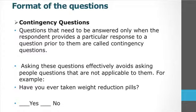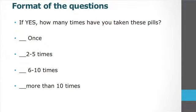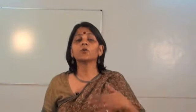Another type of closed-ended question is the contingency question — questions that need to be answered only when the respondent provides a particular response to a prior question. Asking these questions effectively avoids asking people questions that are not applicable to them. For example, if I ask, 'Have you ever taken weight reduction pills?' and the answer is no, we do not proceed further. But if the respondent says yes, then we ask follow-up questions such as, 'How many times have you taken these pills?' — 1 time, 2 to 5 times, 6 to 10 times, or more than 10 times. This is a contingency question, where a prior response determines which respondents go ahead with further questioning.